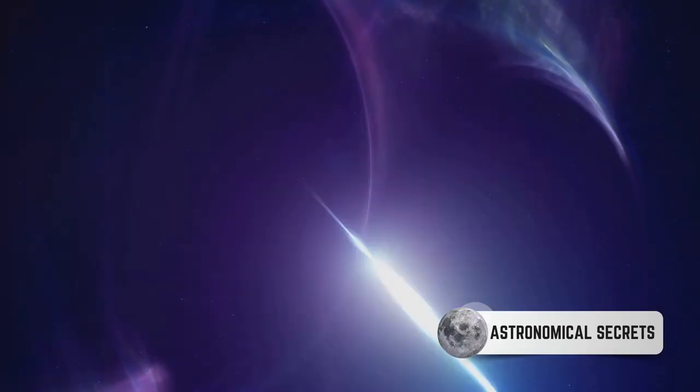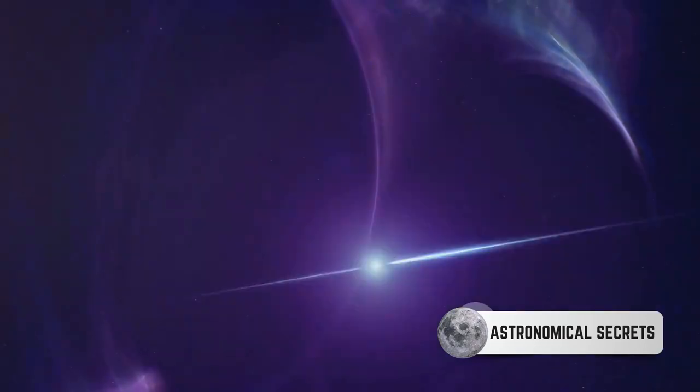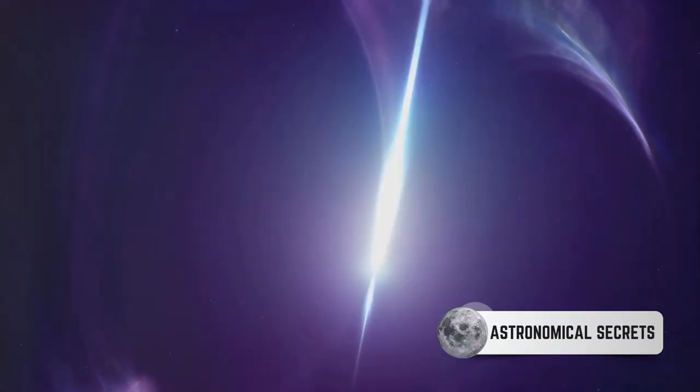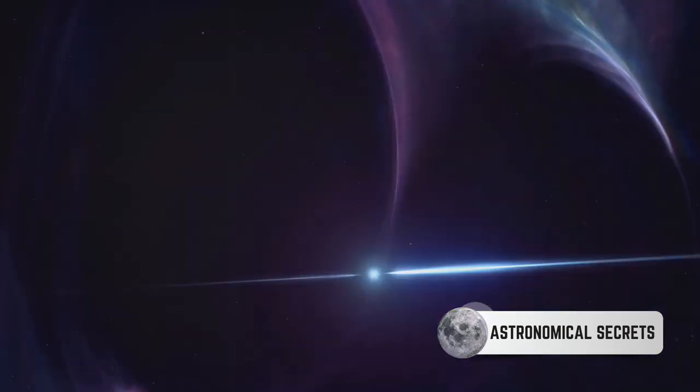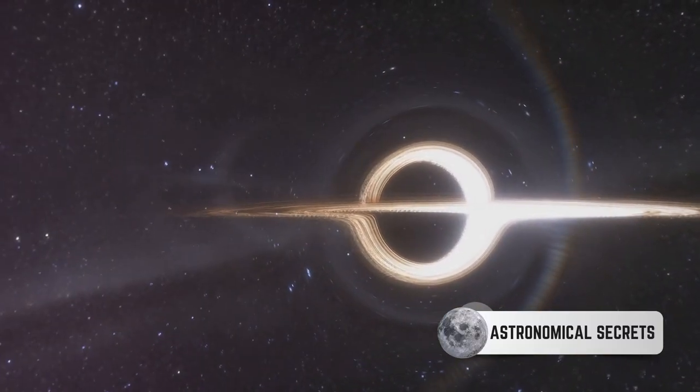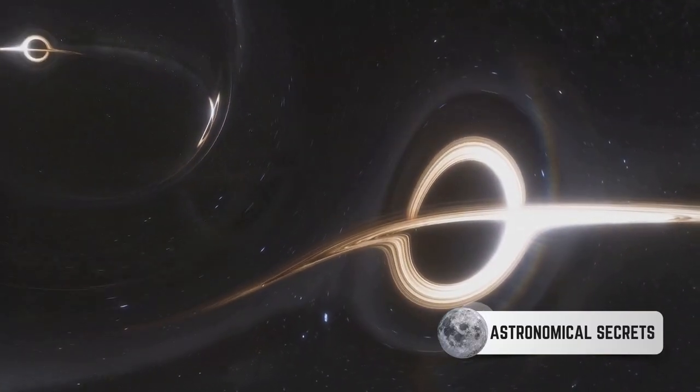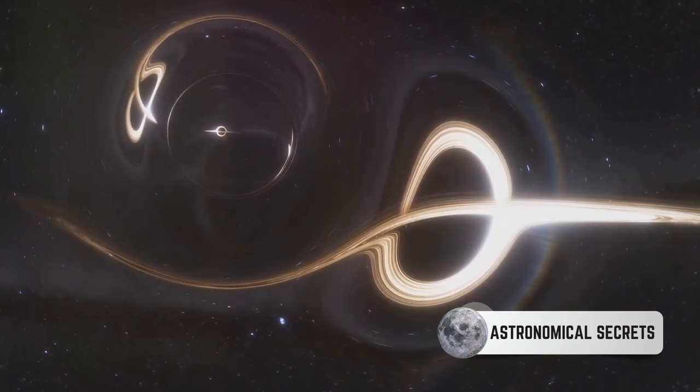Neutron stars are some of the most magnetic objects in the universe. And when we say magnetic, we're talking about a force that's a billion times stronger than the strongest magnet on Earth. It's a force so intense that it can rip atoms apart, distorting them into thin, elongated shapes.